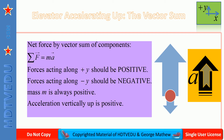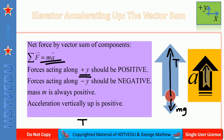We can also use the vector sum approach. Net force equals mass times acceleration — the vector sum of all forces equals ma. We have tension acting vertically up and gravitational force vertically down. Taking up as positive y: tension is positive T, gravitational force is negative along y. Acceleration is up, so it is positive. We still get T minus mg equals ma.